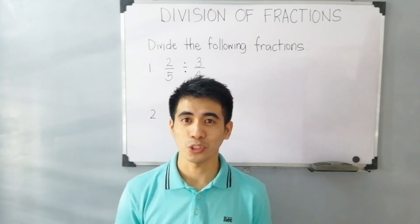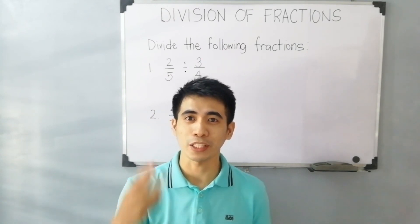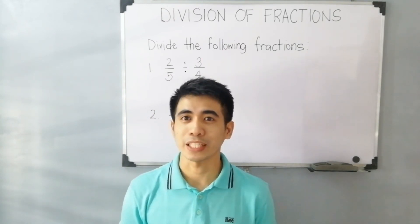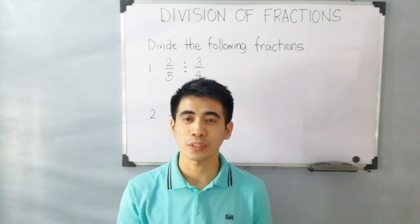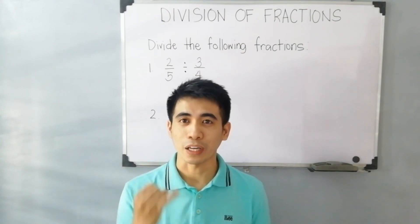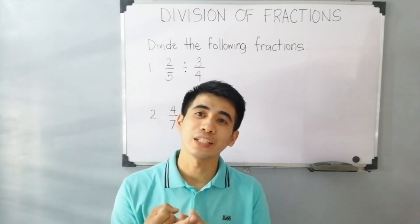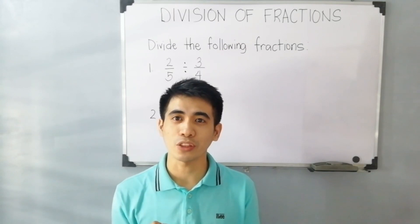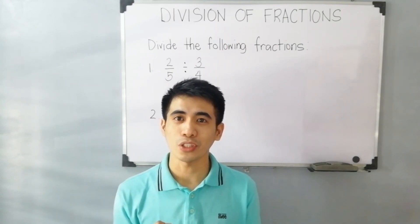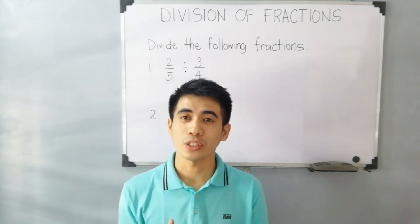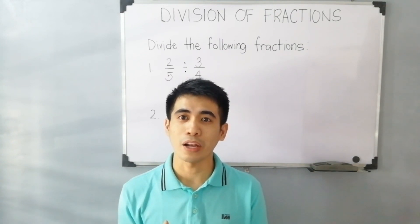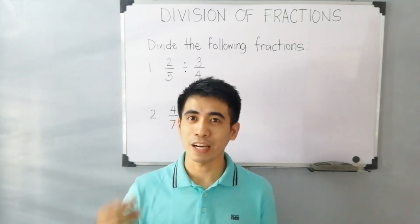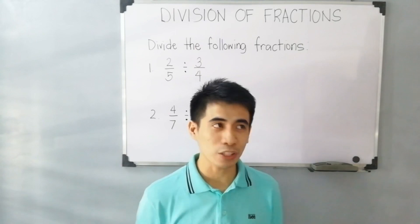In dividing fractions, we have three steps. The first one, just copy the first fraction. Second one, you have to change the operation into multiplication. And the third one is to flip or get the reciprocal of the second fraction. So let's start dividing the following fractions.